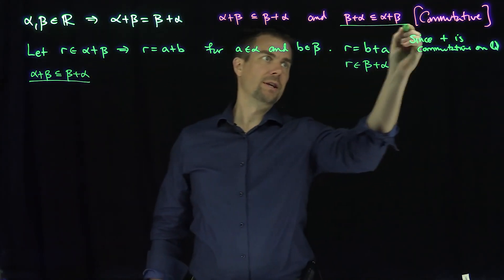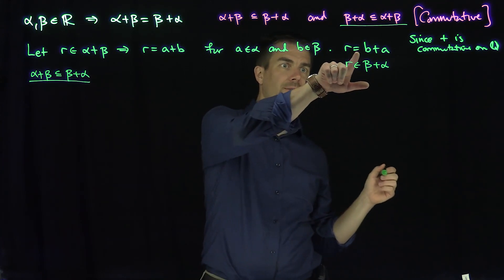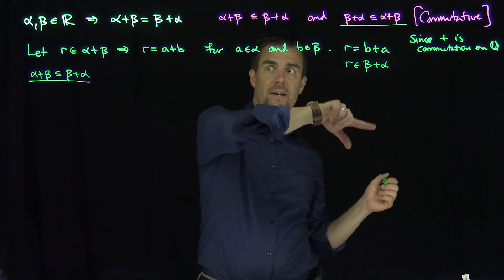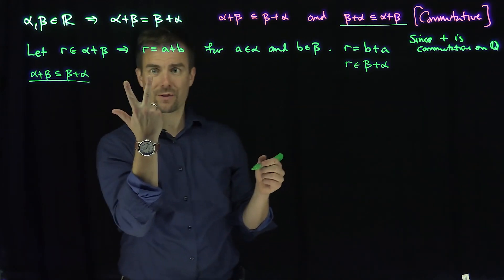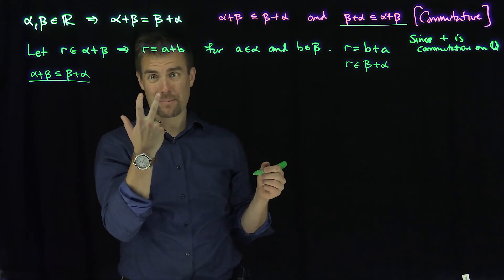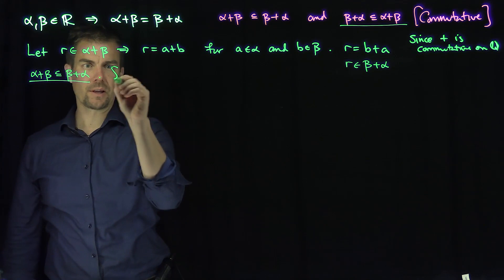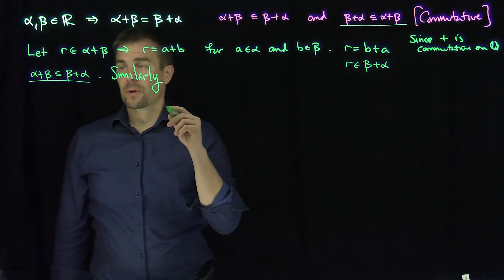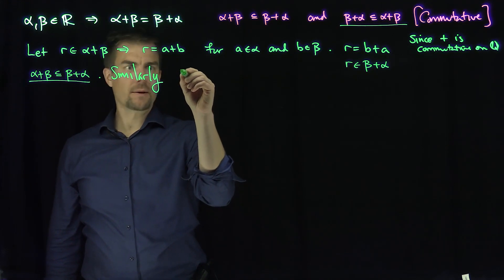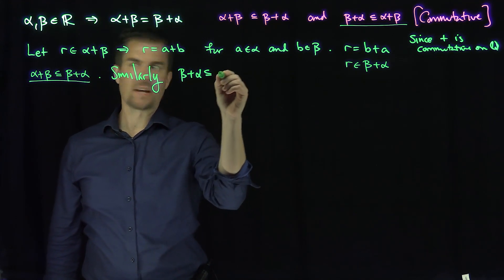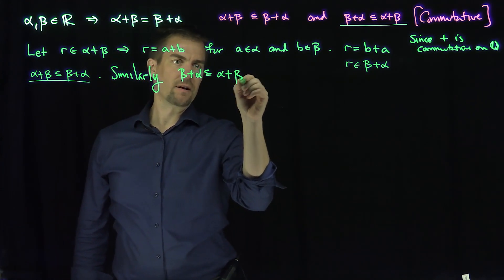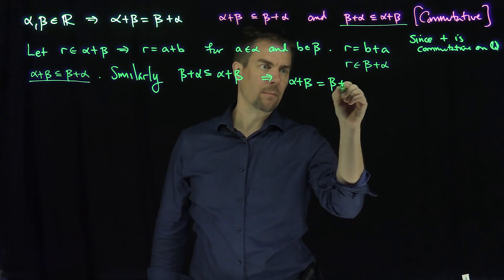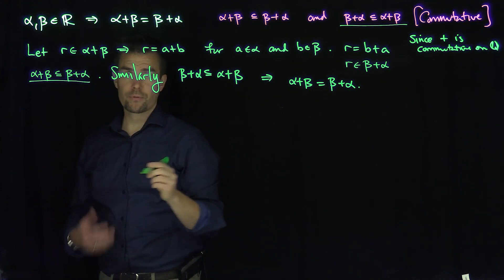The opposite inclusion is identical. I'll start with R equals B plus A for B in beta and A in alpha, commute the rational numbers, and conclude that R is equal to A plus B. Similarly, we have that beta plus alpha is contained in alpha plus beta, and we have equality — so alpha plus beta equals beta plus alpha for real numbers. That's our proof of commutativity.